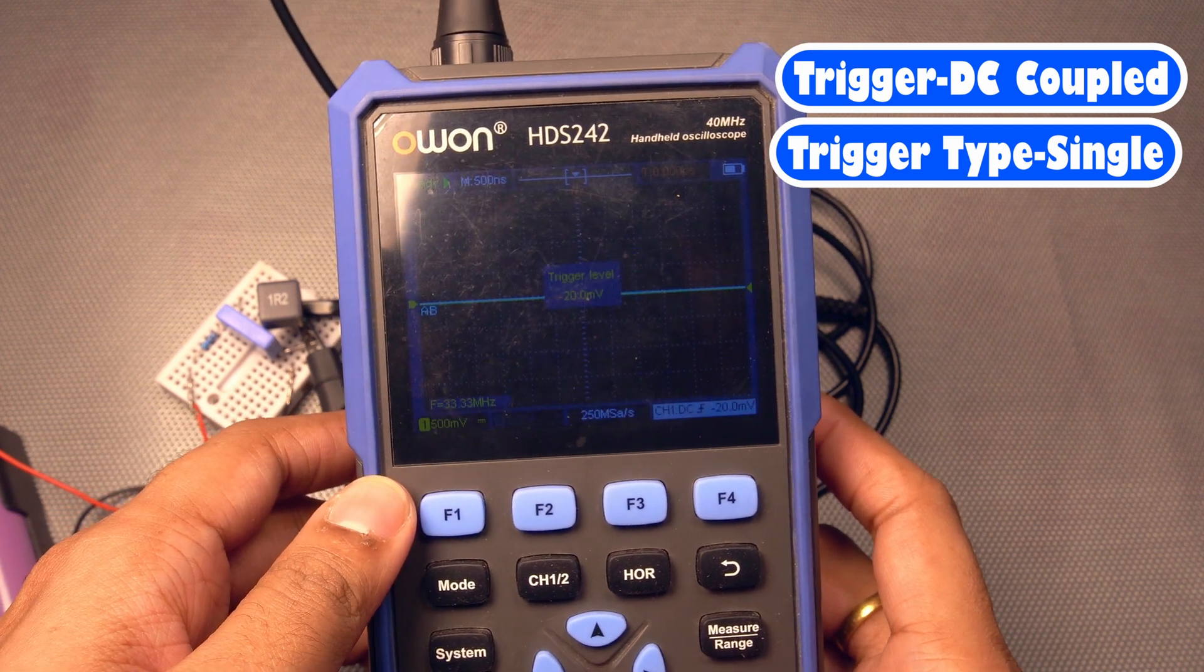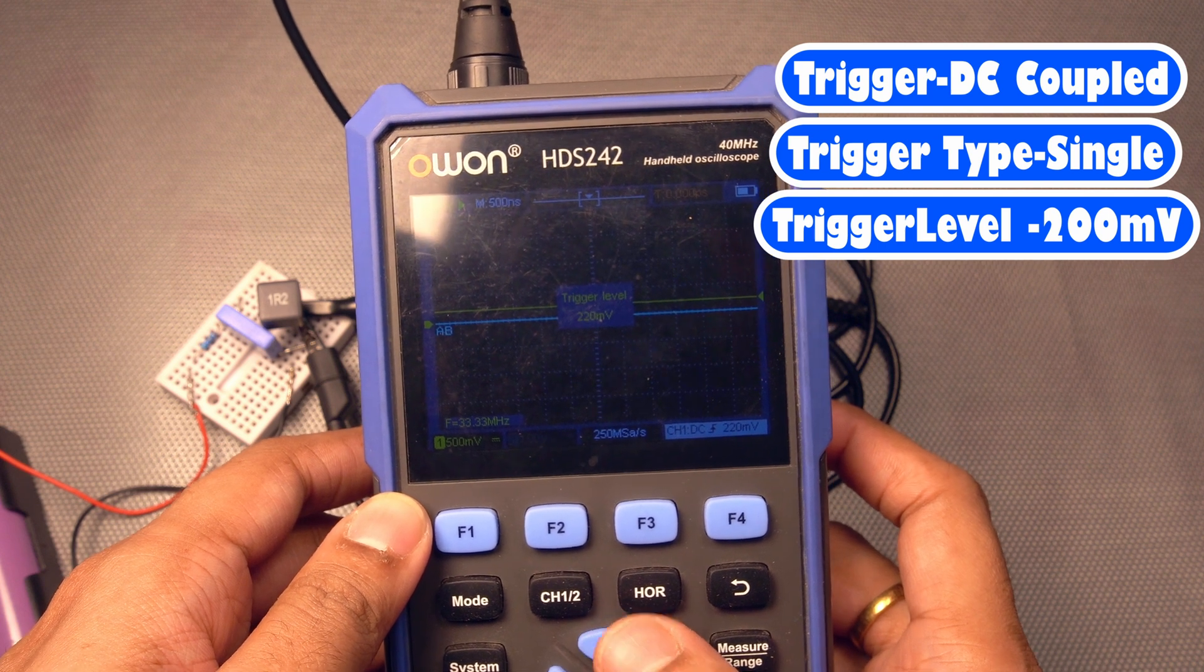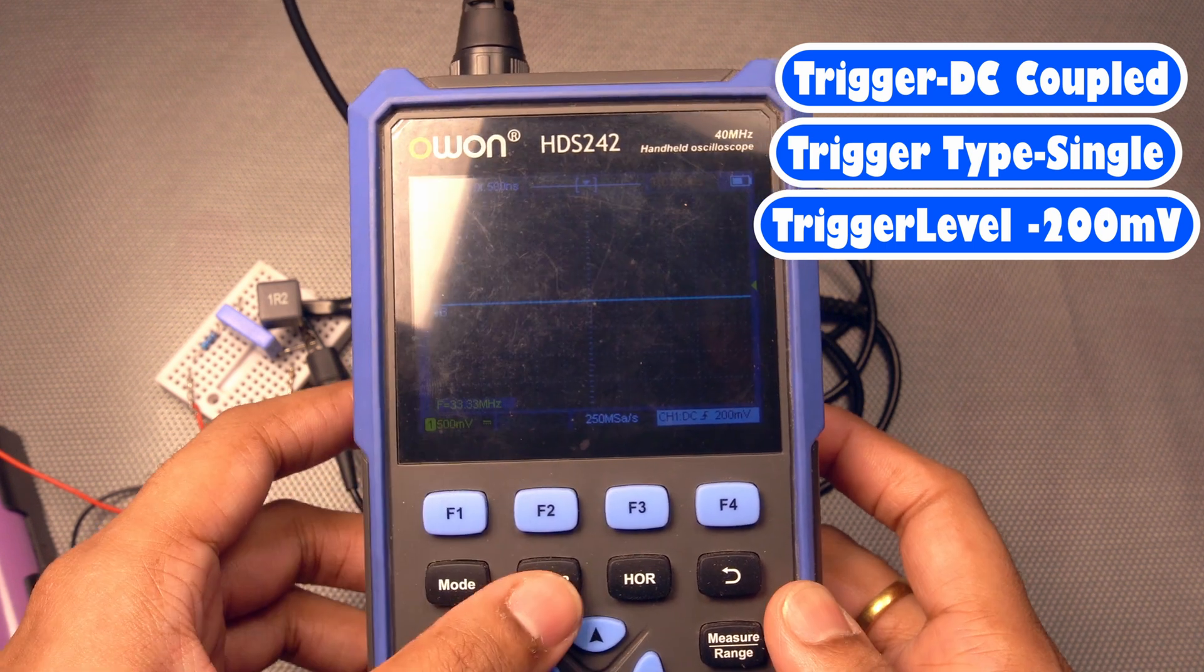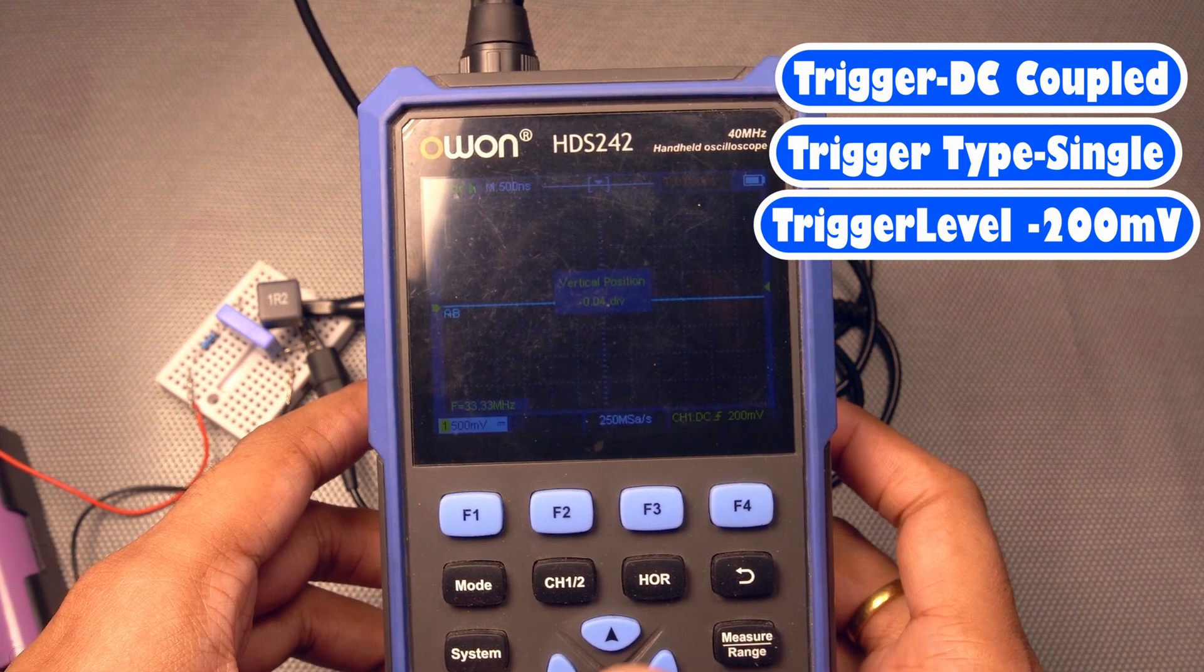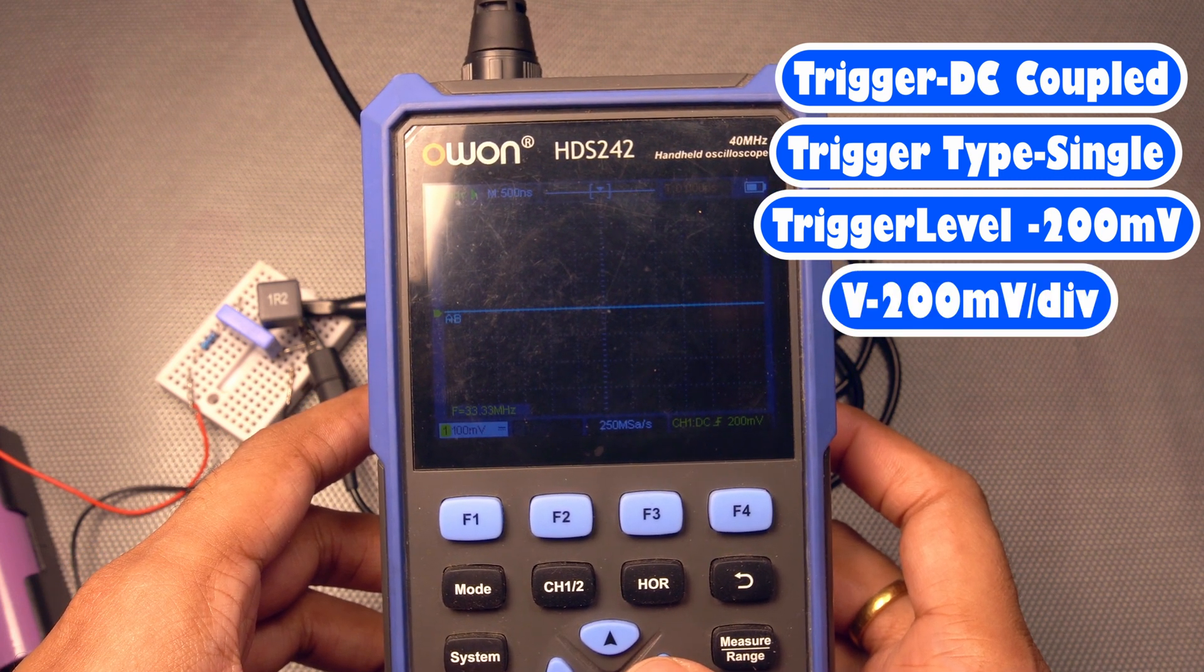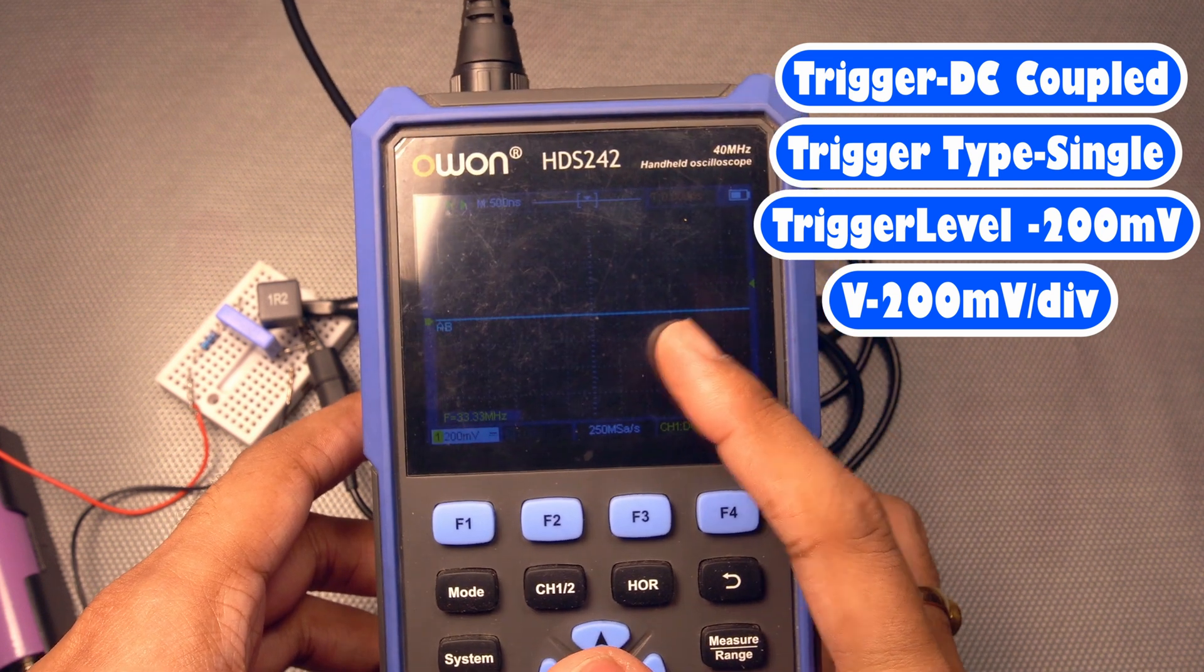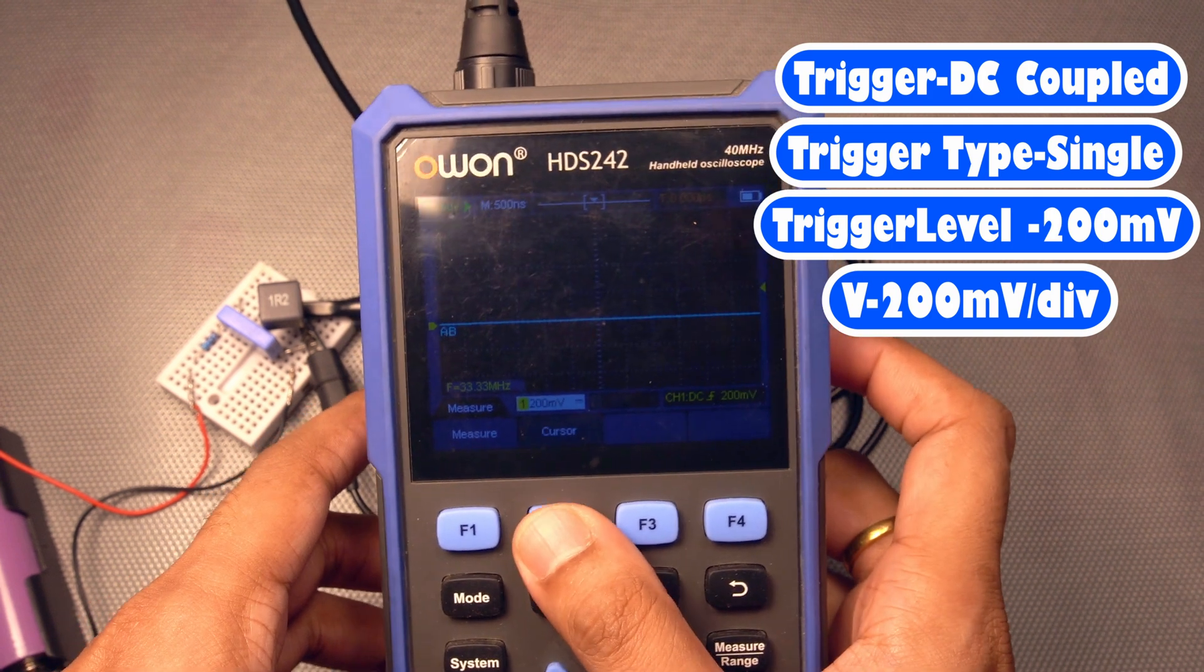to a very low value, say some 200 millivolts, and also the voltage per division should be very low, not too much low, but should be at least, so for me, I've set it to 200 millivolts. I will remove this measure cursors.